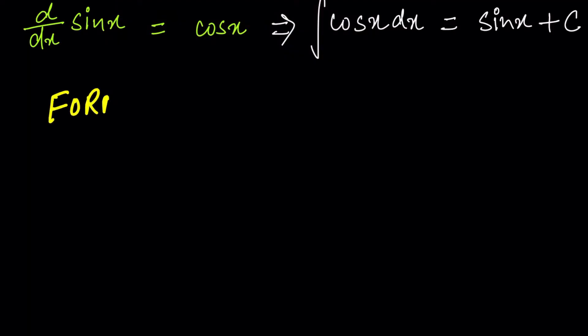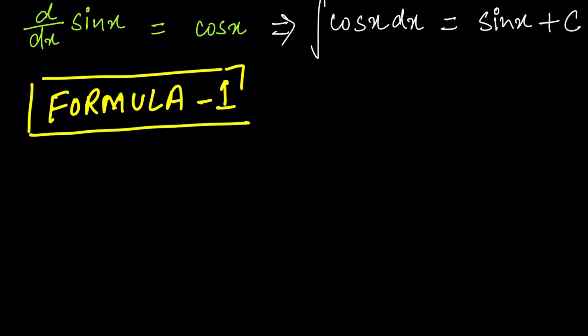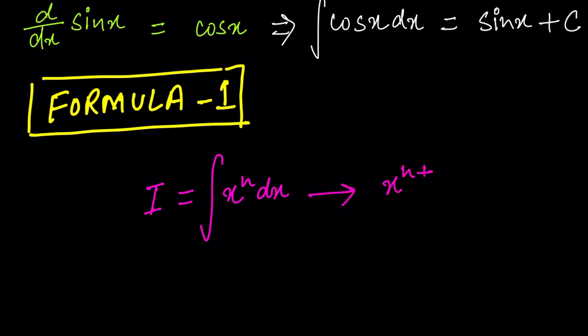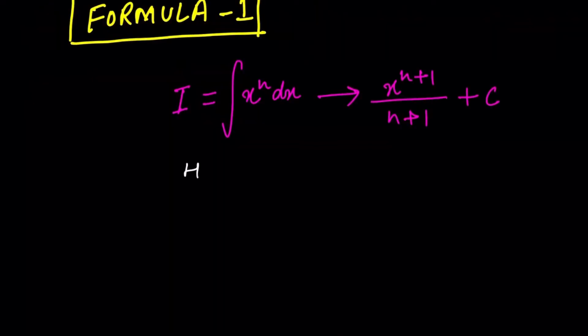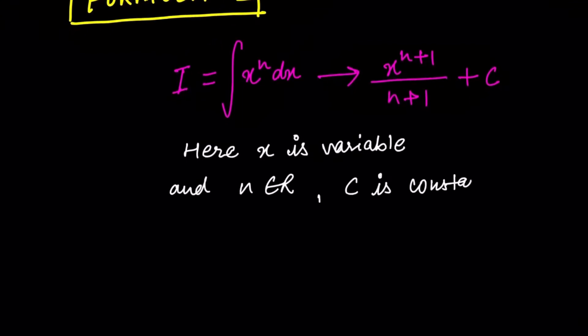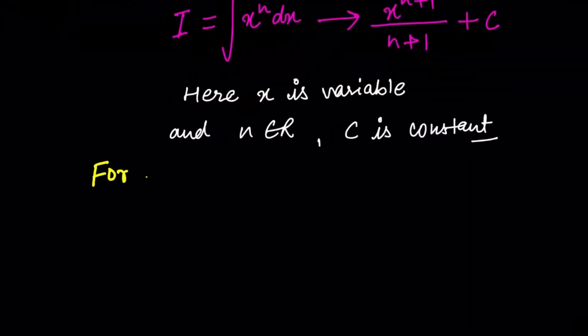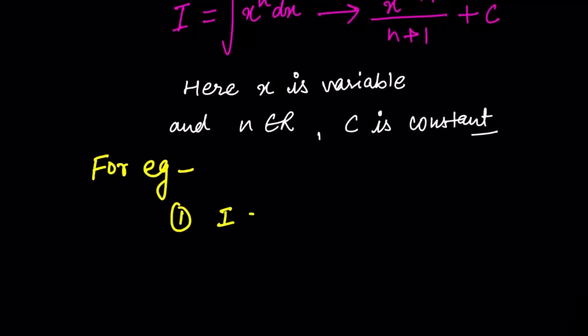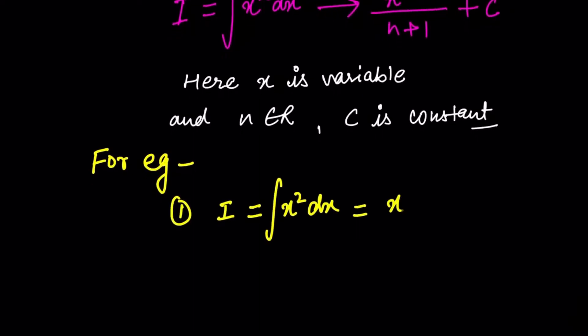The first formula we are going to see in integrals is: I = ∫x^n dx, where x is the variable and n is an element of real numbers — n can be any real number. For example, the integral of x²: when we find the integral of x², we use the first formula of integrals. The formula is: ∫x^n dx = x^(n+1) / (n+1) + C.